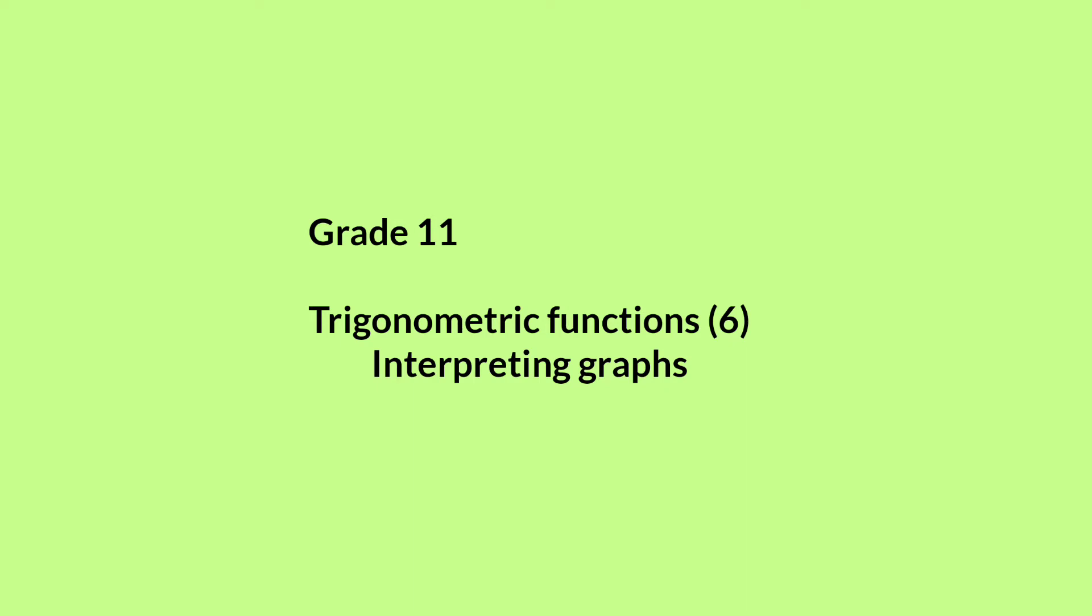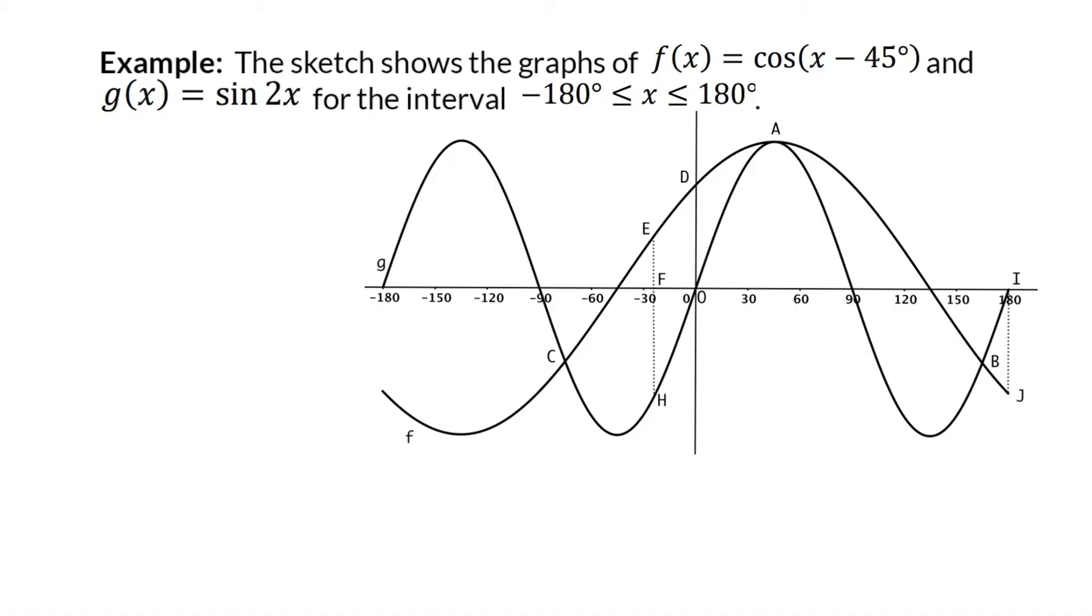In this last lesson for Trigonometric Functions Grade 11, we are going to have a look at interpreting the graphs. When interpreting graphs, it is important to realize that the knowledge you gained in other chapters will now be put to use. Let's have a look at the example. The sketch shows the graphs of f and g for the interval minus 180 to 180 degrees.